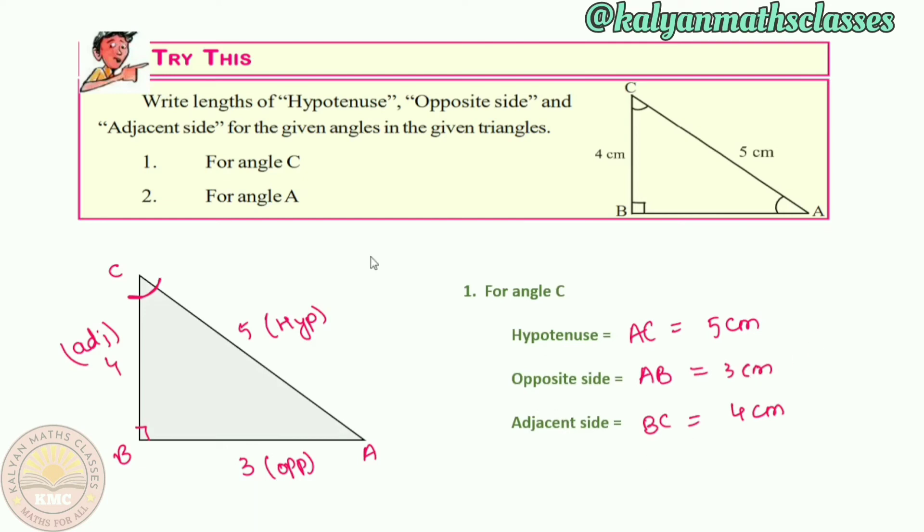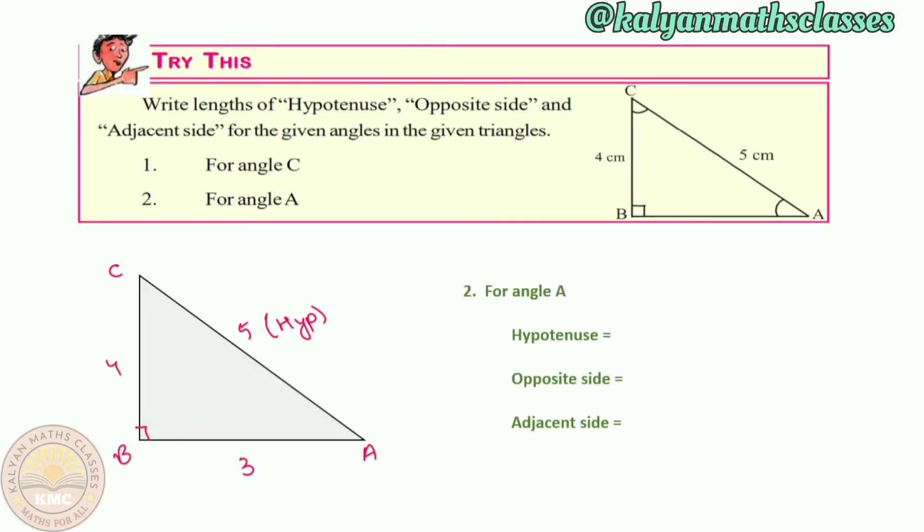Now for angle A, angle A is the reference. Same hypotenuse value 5, but sides change because A is the reference now. So for angle A, hypotenuse AC is 5 centimeters, opposite side BC is 4 centimeters, and adjacent side AB is 3 centimeters.